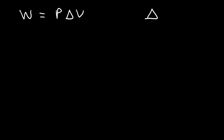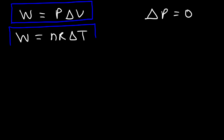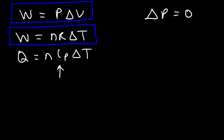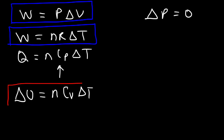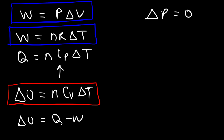If pressure is in pascals and volume in cubic meters, use R = 8.3145 J/(mol·K). To calculate work for an isobaric process when volume changes, use W = P ΔV; when temperature changes at constant pressure, use W = nR ΔT. For heat energy absorbed or released, use Q = nCp ΔT. For change in internal energy for any process, use ΔU = nCv ΔT, or equivalently ΔU = Q − W.